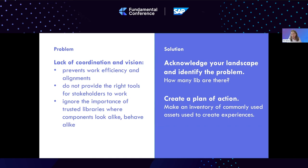The first step is to ask: how many libraries do I have? How do I bring alignment among all of these libraries? Then create a plan of action — make an inventory of common assets that should be used to create experiences.